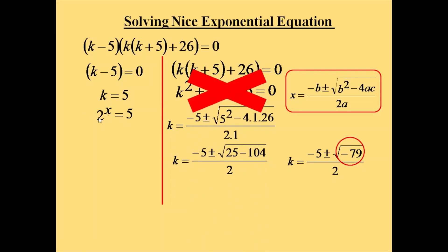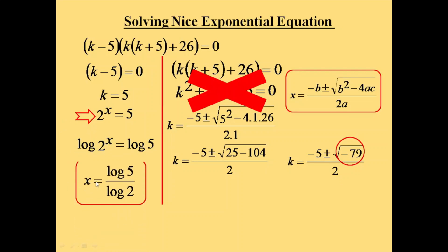We consider only 2^x = 5. Applying log on both sides: log(2^x) = log 5. Using the formula log(a^n) = n·log(a), we bring x to the front: x·log 2 = log 5. Sending log 2 to the other side, the final value of x = log 5 / log 2. Thank you.